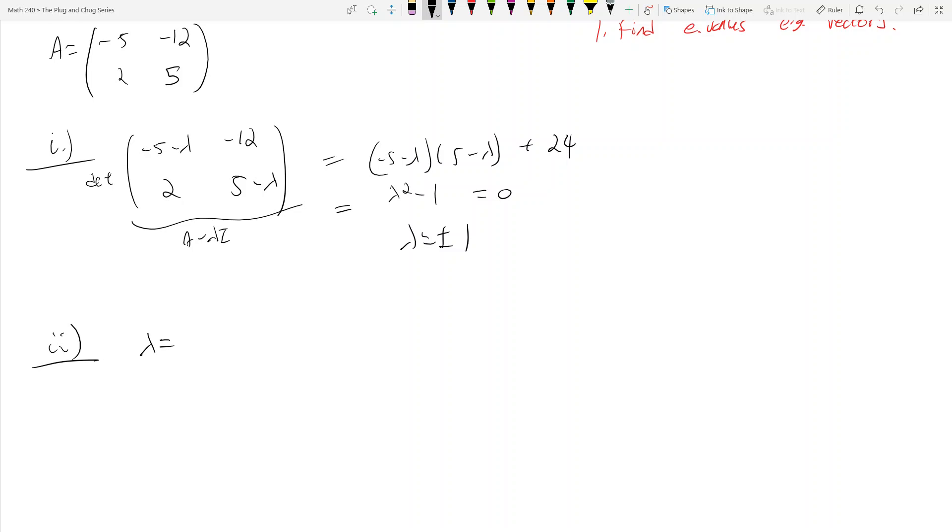For λ equals 1 I have (-6, -12; 2, 4) times (x,y) equals (0,0). From eyeballing this we can see that (2,-1) is going to be an eigenvector. Let's make it (-2, 1). Why not?